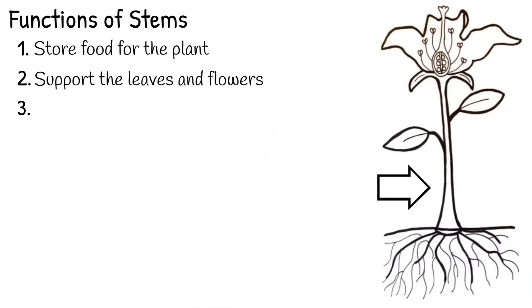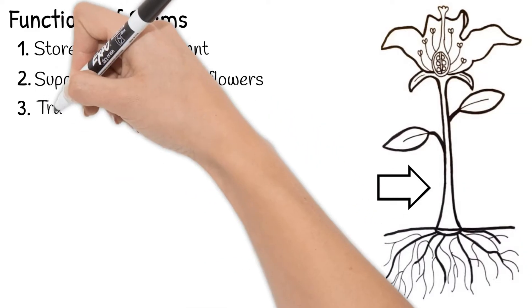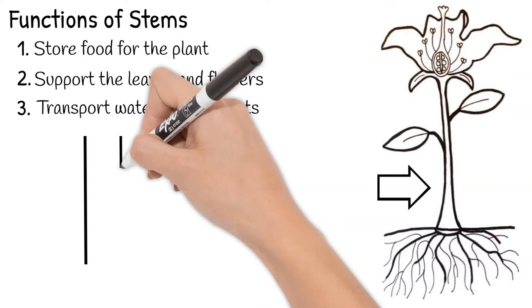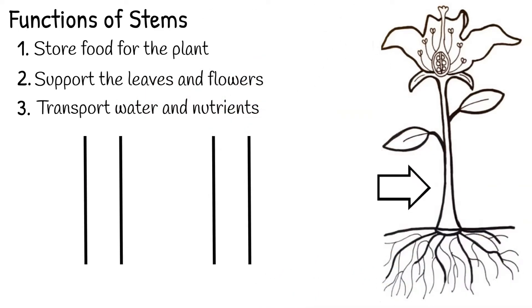Lastly, stems help transport water and nutrients between the leaves, roots, and the rest of the plant. There are two types of tubes within a plant stem that transport what the plant needs to where it needs it.